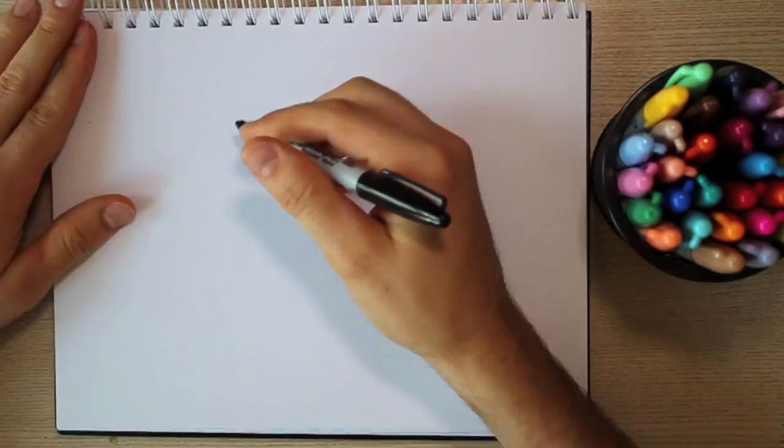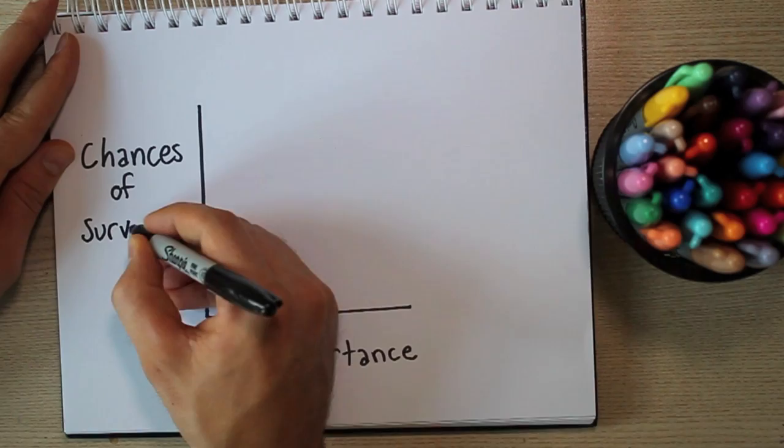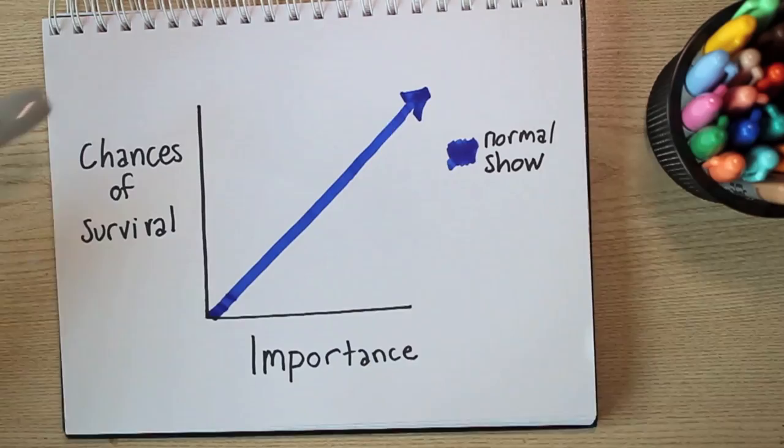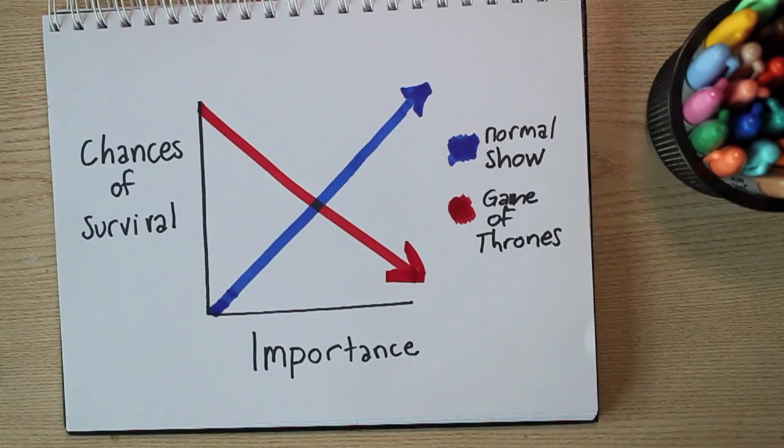Now, in a normal book or TV show, there is generally a direct proportion between the importance of a character and the chances of his or her survival. That is not so much the case in Game of Thrones, where the chances of survival are indirectly proportional to the importance of a character.